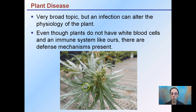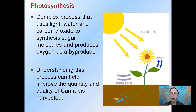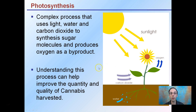Photosynthesis is the last topic here — it's a complex process that uses light, water, and carbon dioxide to produce sugar molecules and oxygen as a byproduct. Understanding this process can help improve the quantity and quality of cannabis that is harvested. While it's presented quickly here, understanding photosynthesis — especially with artificial lighting — can really change the quality of cannabis a grower produces.